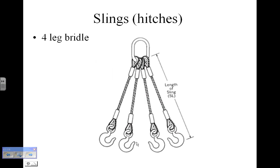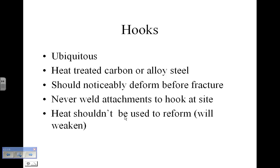And then the bridle hitches — you can see the configuration there. You have a number of wire ropes in this case coming off of a central ring, which gives you a lot of stability.